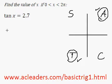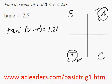So to get started we're going to need a calculator in radian mode. I can plug in tan to the negative 1 of 2.7. Tan to the negative 1 of 2.7 gives us 1.216, and that is the value in the first quadrant.